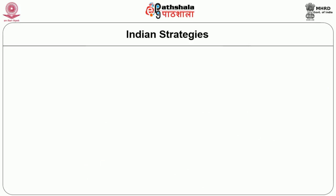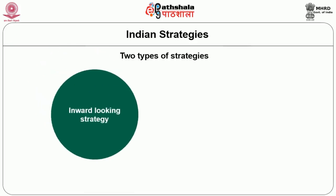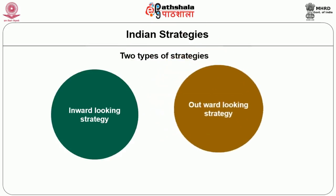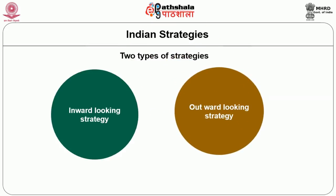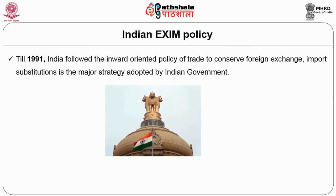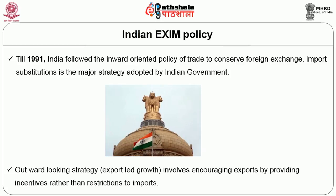Coming to the Indian side, there are two types of strategies in international trade. One is inward-looking strategy and another one is outward-looking strategy. Outward-looking means it is an export-oriented growth. Till 1991, India followed the inward-oriented policy of trade, mainly to conserve foreign exchange, and import substitution was the major strategy. Outward-looking strategy — that is export-led growth — involves encouraging exports by providing incentives rather than restrictions on imports.